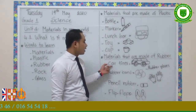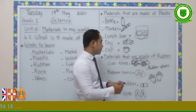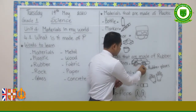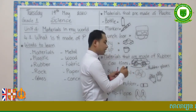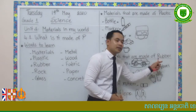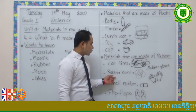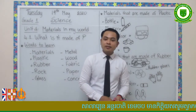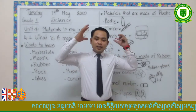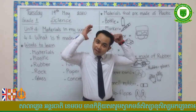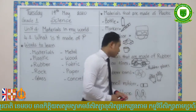Look at this one — car tires. These are the car tires and they are made of rubber. What else? Rubber bands. You always play with rubber bands with your friends, and girls normally use them to fix their hair. Rubber bands are also made of rubber.